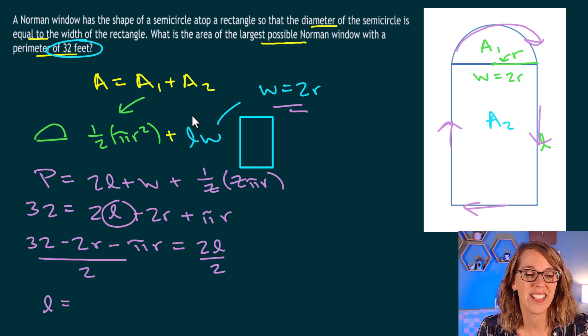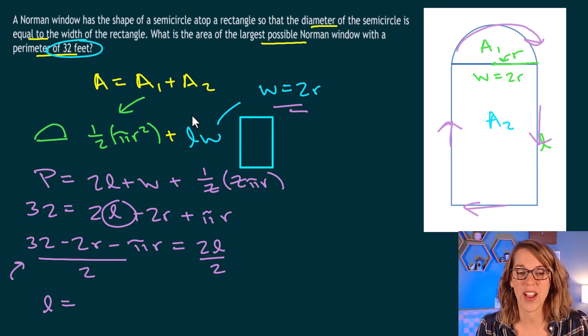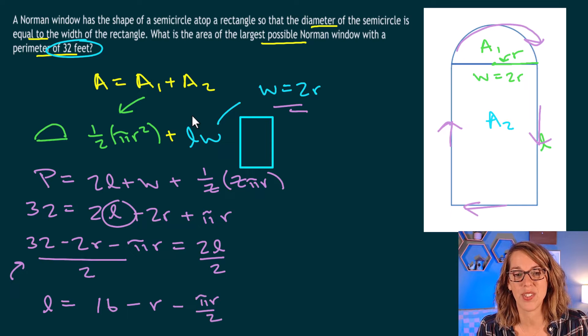So I end up with l is equal to this fraction that I've got here. Let's go ahead and simplify it though. I have 32 divided by 2. That's going to be 16 minus 2r divided by 2 is a single r minus pi r divided by 2, and that's going to be minus pi r divided by 2.